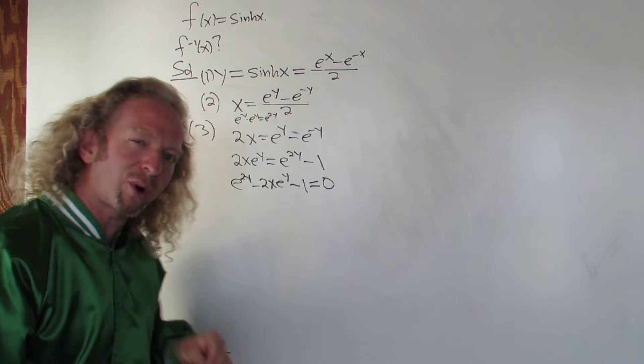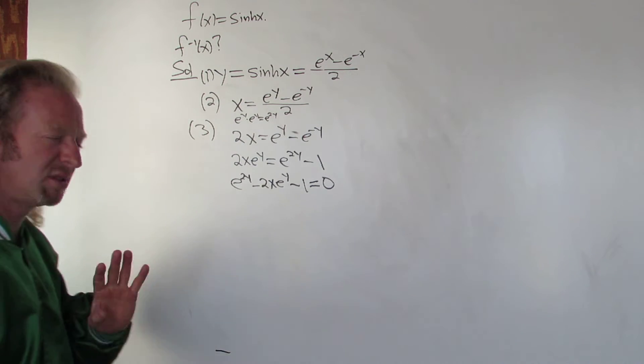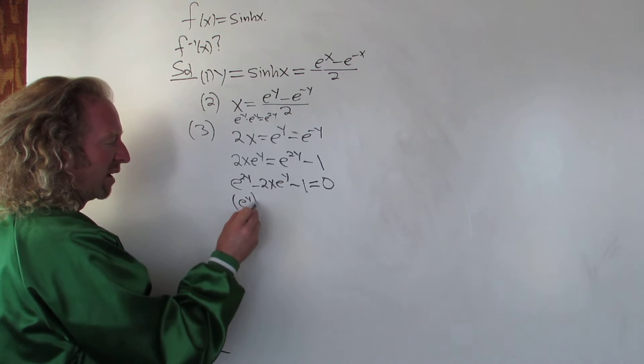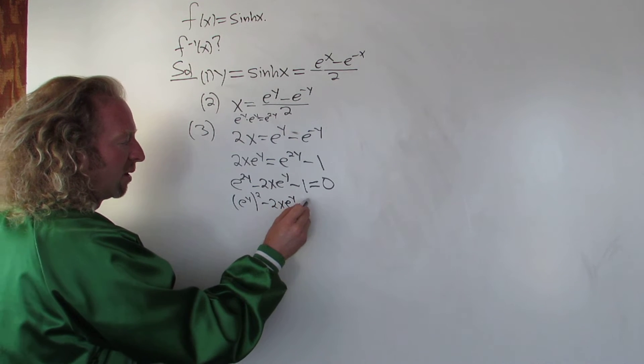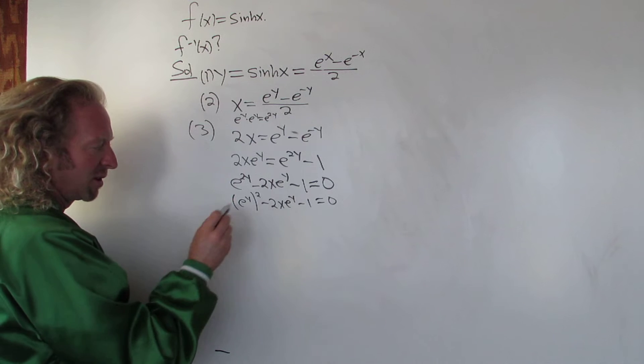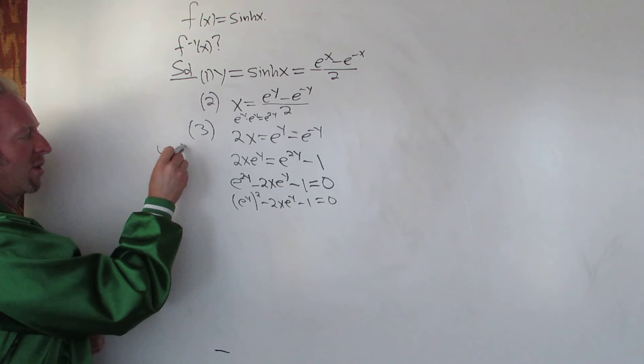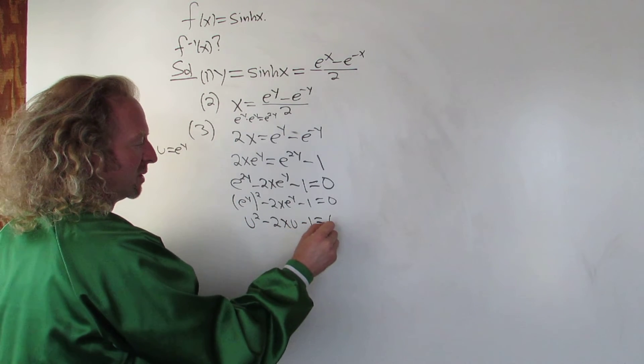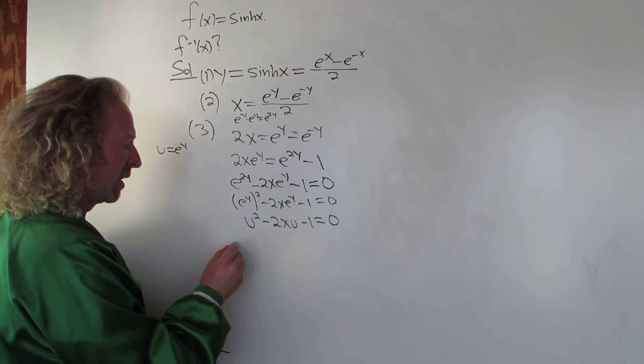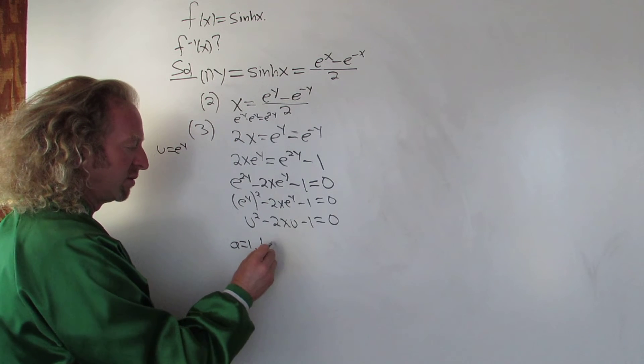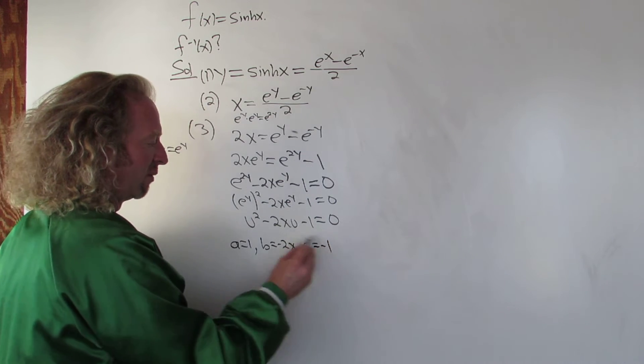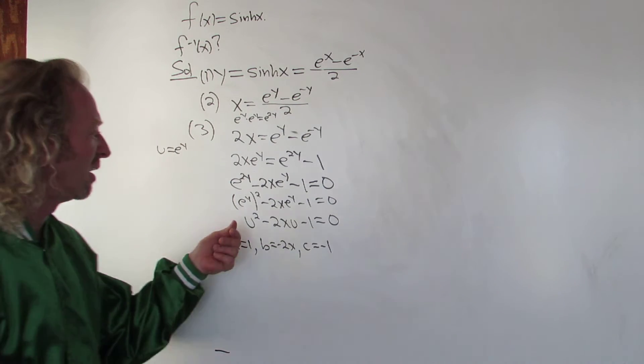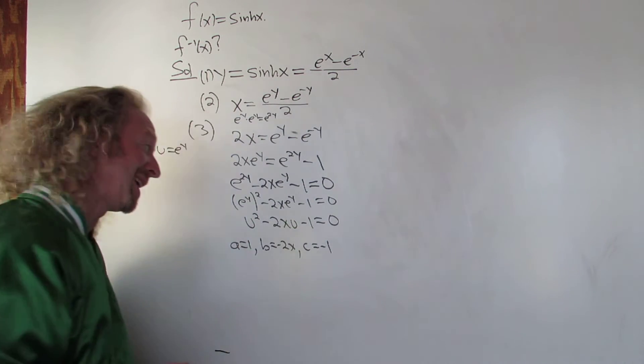And let's use the quadratic formula. You could probably complete the square. Quadratic, let's do that. You can think of this as e to the y squared. See, maybe it wasn't clear now. Hopefully it is. And let's make a substitution just for clarity. We'll let u equal e to the y. So this actually becomes u squared minus 2x u minus 1 equals 0. So using the quadratic formula, a is equal to 1, b is equal to negative 2x, and c is equal to negative 1, right? Remember, it's ax squared plus bx plus c equals 0, except here it's a u, so this is actually our b. Our b has an x in it, okay?